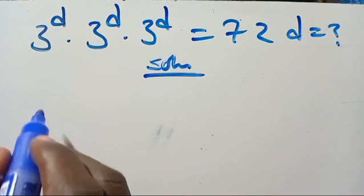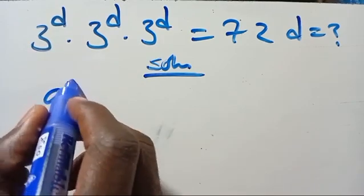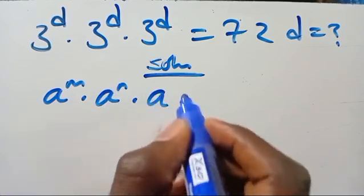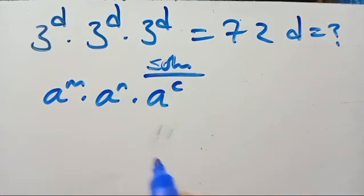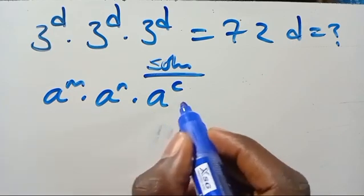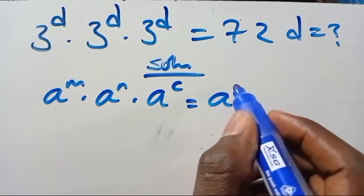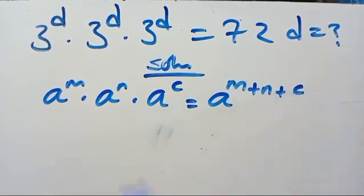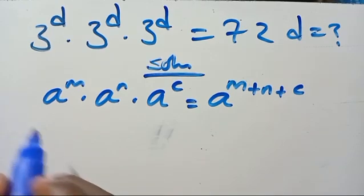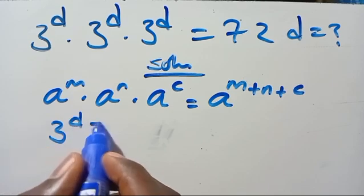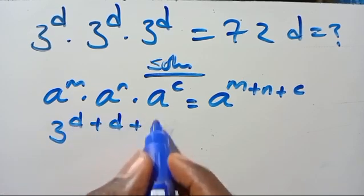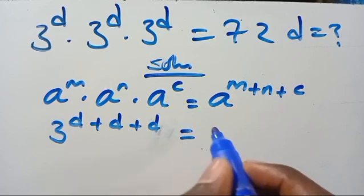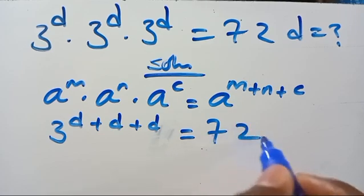Let's look at the solution. Recall that A to the power of N multiplied by A to the power of N multiplied by A to the power of C — since they have the same base — we can write one base A to the power of N plus N plus C. So from here we are going to have 3 to the power of D plus D plus D, since they have the same base, then we bring the powers together, equals 72.